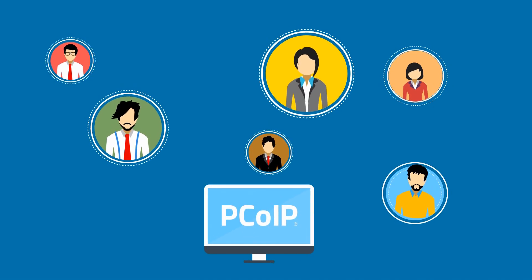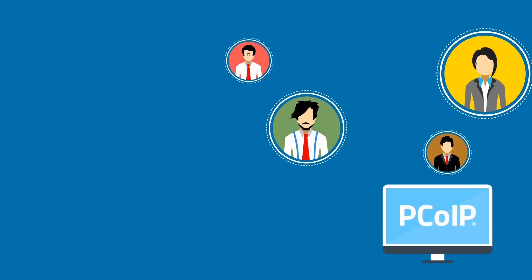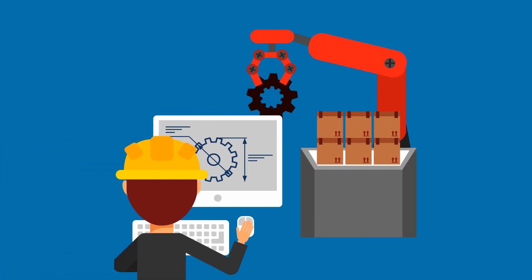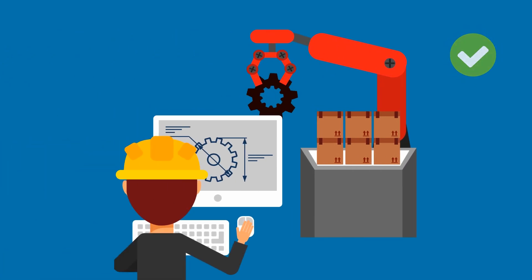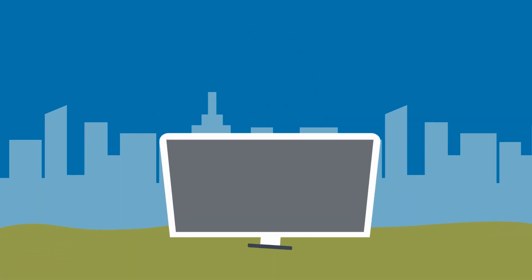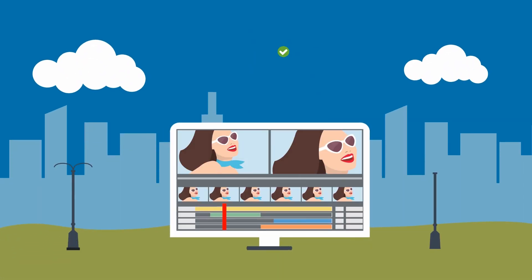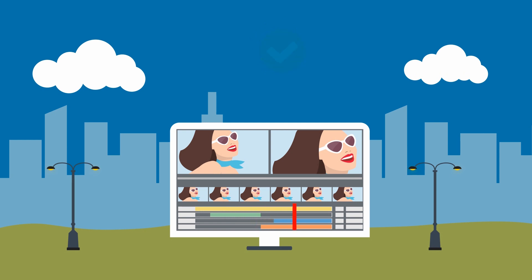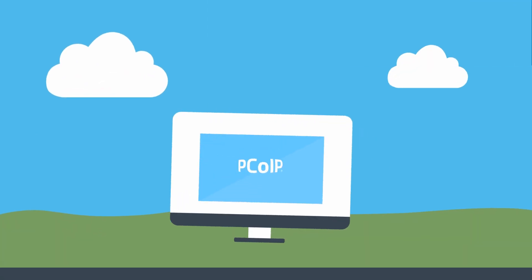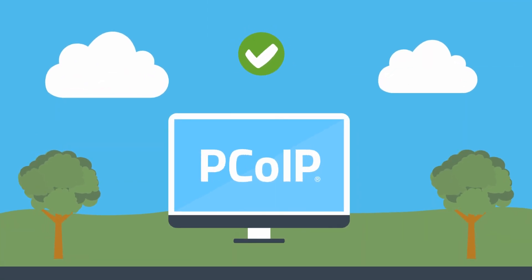What does PCoIP mean for real-life use cases? It means manufacturing users can trust the quality of the images they are looking at to make accurate decisions with their designs. It means users in media and entertainment can deliver finished products that meet the exacting quality standards of their industry. Customers can trust in the quality and performance of the solution.